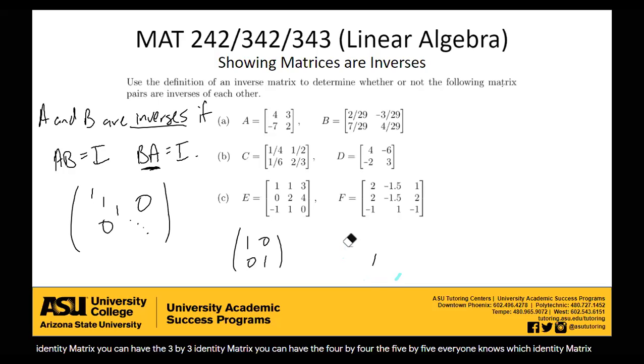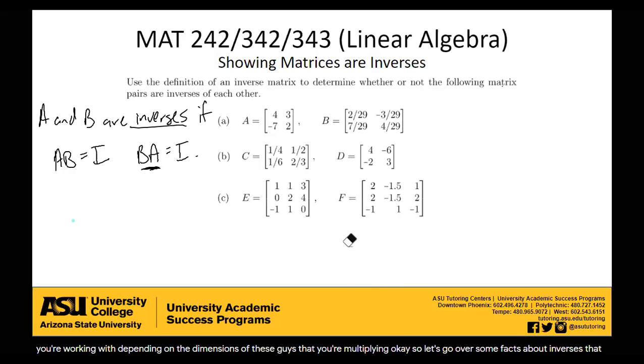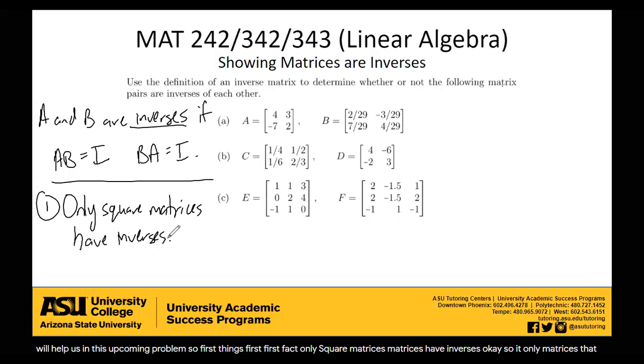Let's go over some facts about inverses that'll help us in this upcoming problem. First things first, only square matrices have inverses. Only matrices that have the same number of rows and the same number of columns have inverses. You cannot have a matrix that has two rows and three columns have an inverse. It's not possible.